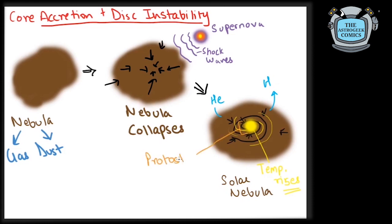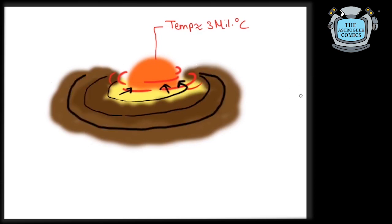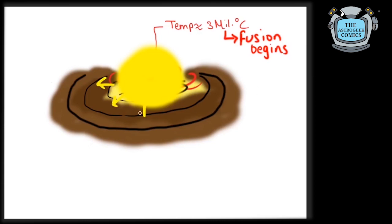This structure formed the protostar which would later become the Sun. As the temperatures raised to above 3 million degrees, fast winds started to blow around the center. Surrounding material was still falling inwards. The temperature soon reached the limit for hydrogen nuclei to fuse into helium and released tremendous amounts of energy in the form of heat and light. This was the Sun. This sudden release of energy pushed back the infalling material.